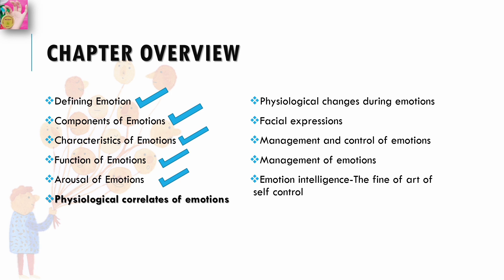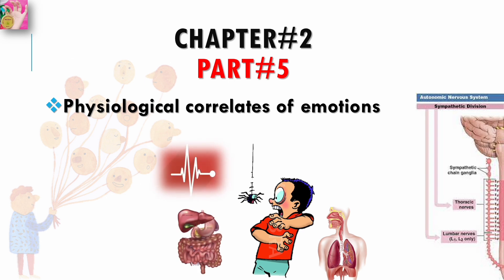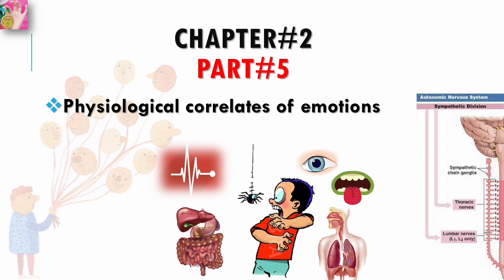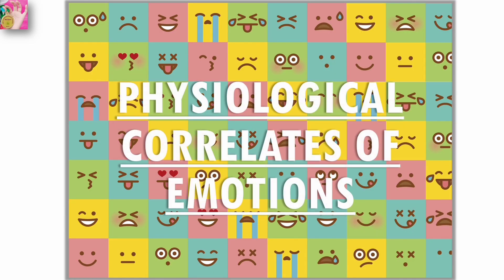The links are present in the description section — go ahead, click on those links, and watch those videos. If any link is missing, you can ask me in the comment section and I will update the description section for you. In this video, we will be learning about the physiological correlates of emotions. This is Part 5 of Chapter 2.